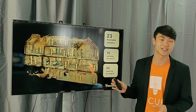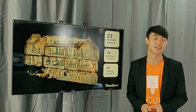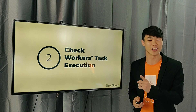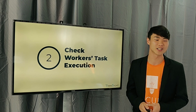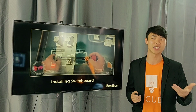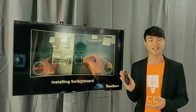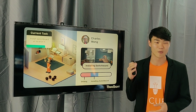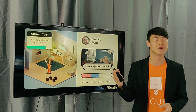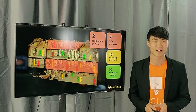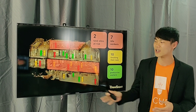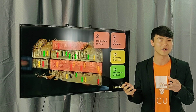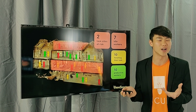We let contractors see insights into how many available workers they have and who is working where. But more importantly, we show who is working on what. We check the worker's task execution using activity recognition — for example, detecting that a worker is installing a switchboard. We can see what the task is supposed to be, its completion status, and for every worker, who is doing what and where the risk areas are.